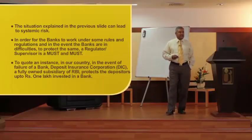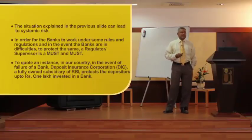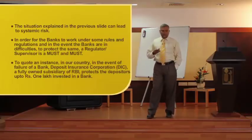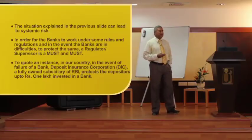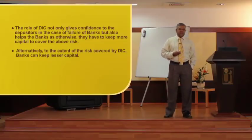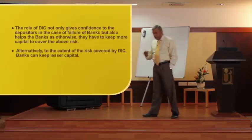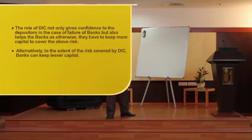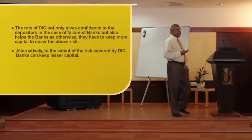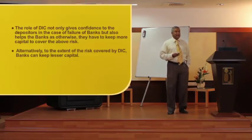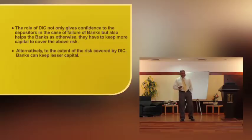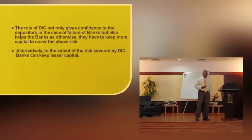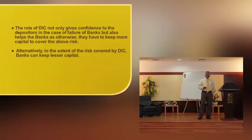In our country, in the event of failure of a bank, a bank goes into liquidation. The Deposit Insurance Corporation, a subsidiary fully owned by RBI, protects the money of depositors to the extent of one lakh per bank. The role of the Deposit Insurance Corporation not only gives confidence to depositors — because depositors know that even if the bank goes into liquidation they have a claim of one lakh through the Deposit Insurance Corporation — but also helps the bank in risk management. To the extent of risk covered by the Deposit Insurance Corporation, banks can keep lesser capital.